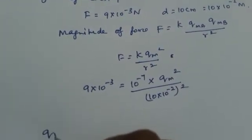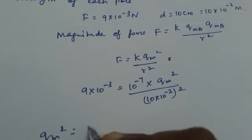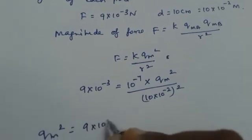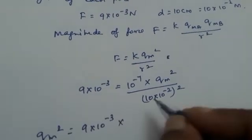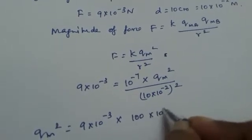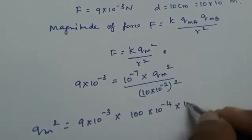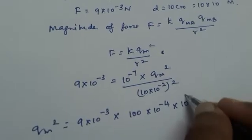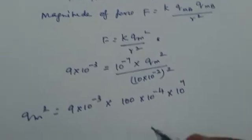Now this can be found out as QM² = 9 × 10^-3 ×, here it is square. So it is 100 × 10^-4 × 10^7, plus 7.